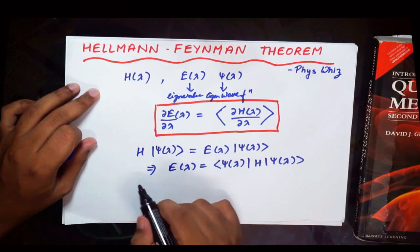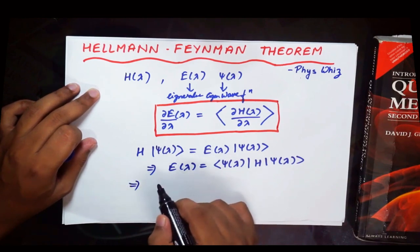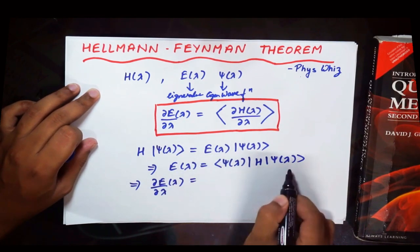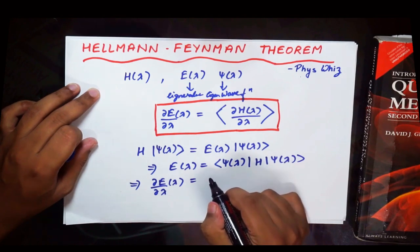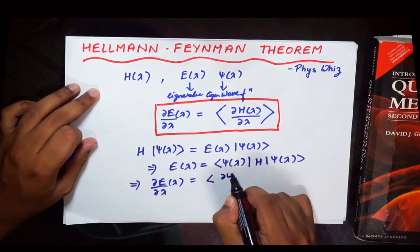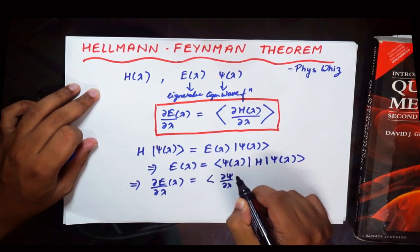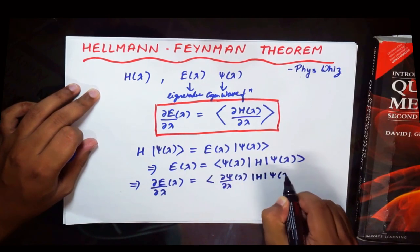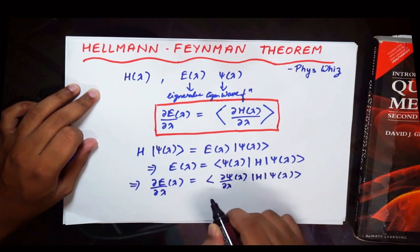Now the next step would be to take the derivative of E with respect to this parameter lambda. Then here we will apply the product rule. So we will get del psi by del lambda, H psi lambda, plus.